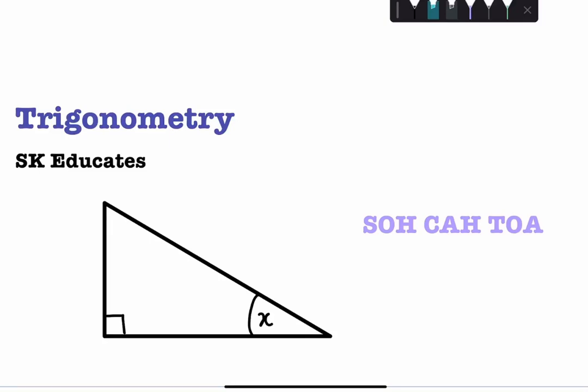So in this case the longest side is this slanted side here so I'm going to call that HYP which is short for hypotenuse, and then X is the angle that is missing that we're looking for, and the side opposite to that is just called opposite so I'm just going to put OPP for short, and the remaining side which is this bottom side here is called adjacent.